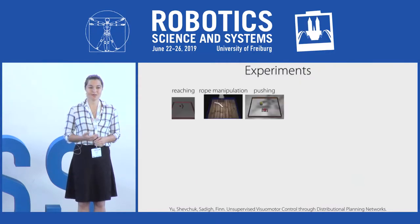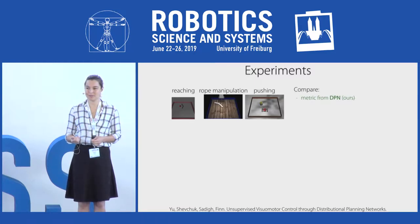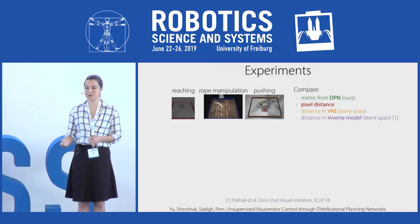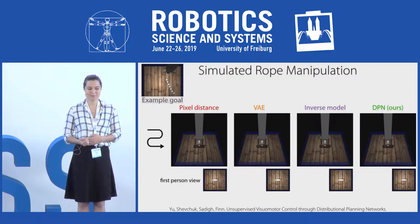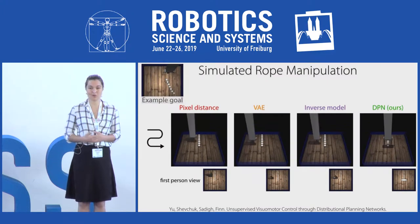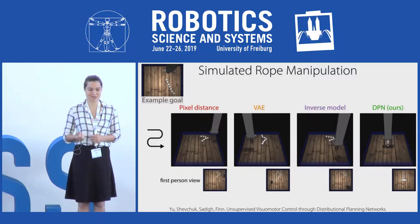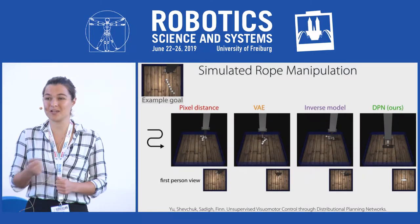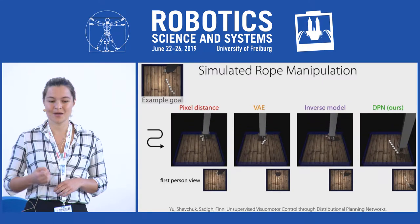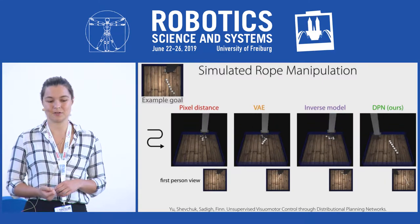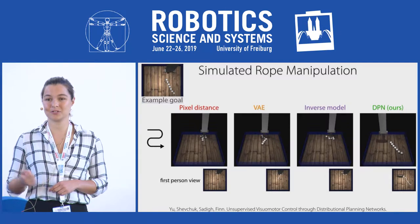We evaluate on three simulated domains, comparing our DPN approach to a pixel distance metric, a metric induced by a variational autoencoder, and a metric induced by an inverse model. Across the board, our approach produces a metric that leads to successful reinforcement learning. For tasks involving deformable objects such as ropes, pixel distance, VAEs, and inverse models fail to produce a metric that pays attention to the position of the rope, while our approach successfully learns a metric that reaches both the desired object position and arm position.